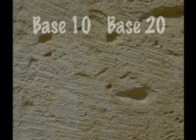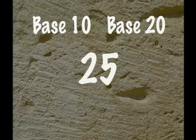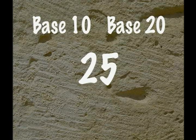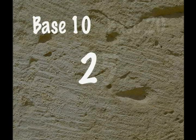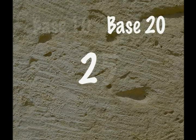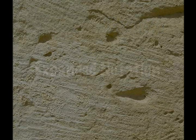But place value in a base 20 system has some interesting properties. Let's compare 25 in base 10 and 25 in base 20 — you'd think those would be identical numbers, but don't let appearances deceive you. In base 10, the five is in the ones place and the two is in the tens place. In base 20, the five is in the ones place, but the two is in the twenties place.